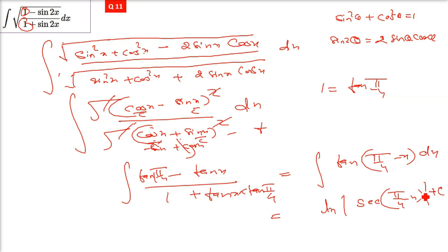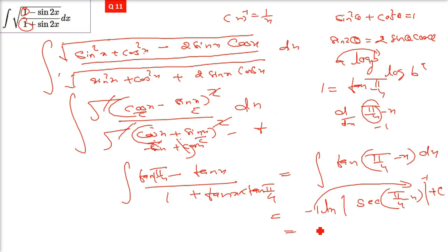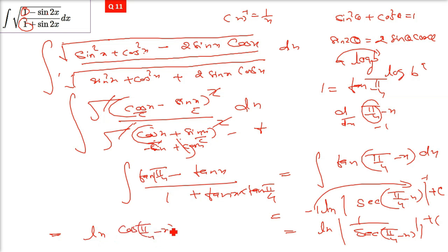The negative from differentiation of (π/4 − x) goes to the power: −ln|sec(π/4 − x)| = ln|sec(π/4 − x)|^(−1) = ln|cos(π/4 − x)|. So the final answer by this approach is ln|cos(π/4 − x)| + C, always keeping the modulus.